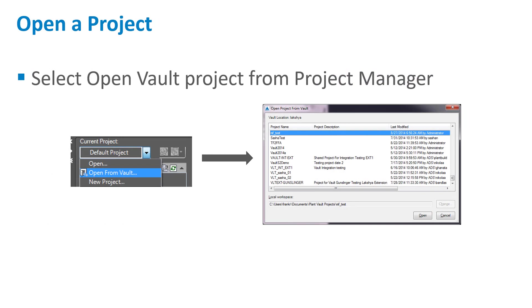So once the project is inside Vault, how do I open it inside Plant3D? In the Plant3D Project Manager, you will see there is an Open from Vault option. This should always be used when opening a Vault project. You can always tell a project in the Project Manager that is stored in Vault, as it will have the Vault project icon on the left of the project name, as you can see there in the left graphic.